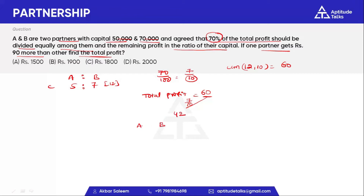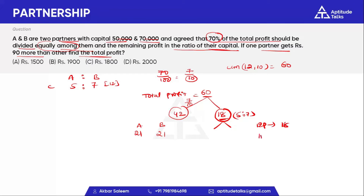This 42 is divided equally, so A gets 21 and B gets 21. The remaining amount is 18 parts. This 18 is divided in the ratio of their capital, which is 5 to 7. Since 5 to 7 is 12 parts equal to 18, one part equals 1.5. So A gets 5 parts which is 7.5, and B gets 7 parts which is 10.5.